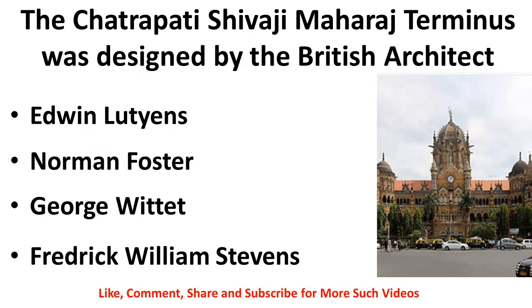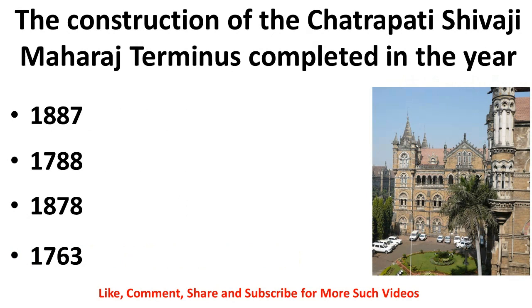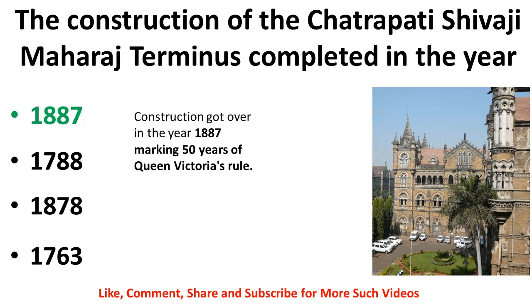The Chhatrapati Shivaji Maharaj Terminus was designed by the British architect — Edwin Lutyens, Norman Foster, George Wittet, or Frederick William Stevens? The correct answer is Frederick William Stevens. The construction of the Chhatrapati Shivaji Maharaj Terminus was completed in the year — 1887, 1788, 1878, or 1763? The correct answer is 1887.